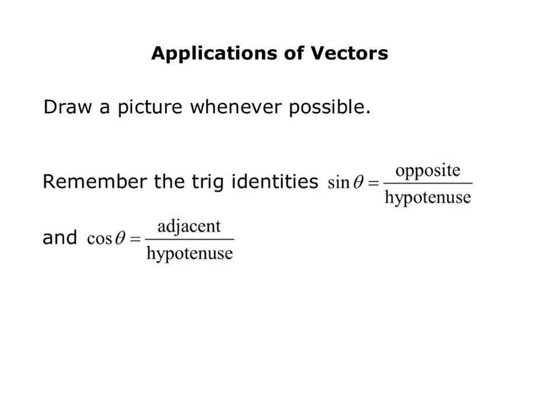And then also remember your basic trig identities. Sine of theta equals the opposite over hypotenuse if you're looking at a right triangle. And cosine of theta equals the adjacent side over the hypotenuse.